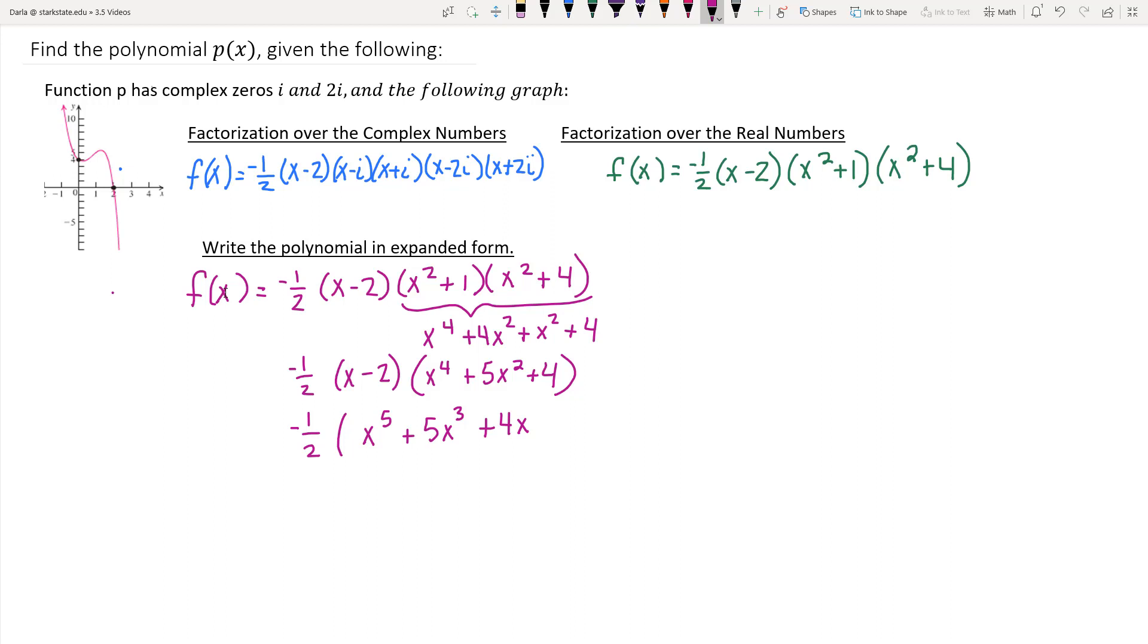Taking the negative 2 times the x to the fourth is negative 2x to the fourth. Take the negative 2 times the 5x squared is going to give us negative 10x squared. And negative 2 times 4 is negative 8.